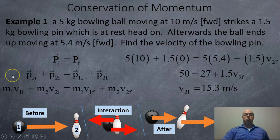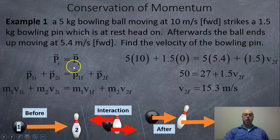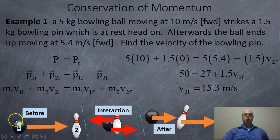Here's an example: a 5-kilogram bowling ball moving at 10 meters per second forward strikes a 1.5-kilogram bowling pin which is at rest, head-on — so it's a one-dimensional interaction. Afterwards, the ball ends up moving at 5.4 meters per second forward. Find the velocity of the bowling pin. Using I and F notation: P_I = P_F, so P1I + P2I = P1F + P2F, where object one is the bowling ball and object two is the pin.